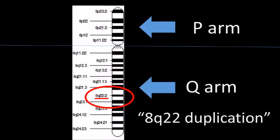So if you hear of 8q22 duplication, that means that there is a duplication, an extra copy of some genetic material, on the long arm q of chromosome 8 at the section called 22.